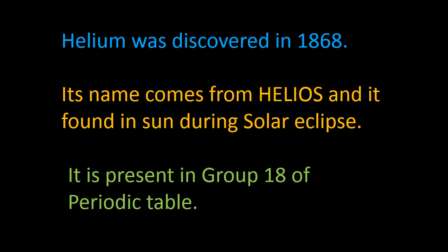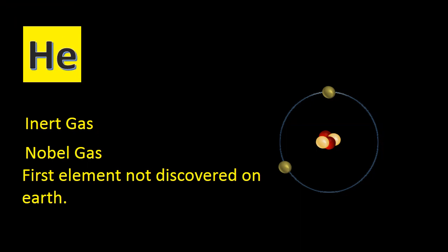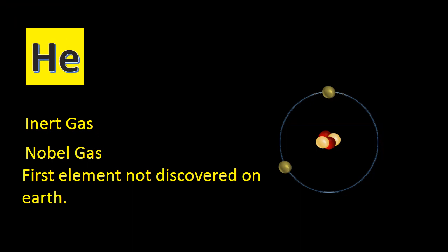Helium is an inert gas as it belongs to the noble family — or we can say the richest family — of the periodic table. It obeys the duplet rule, which is why it's stable and never bonds with other elements.